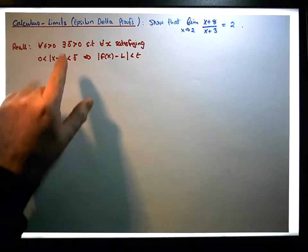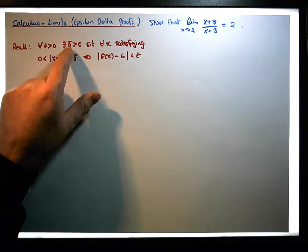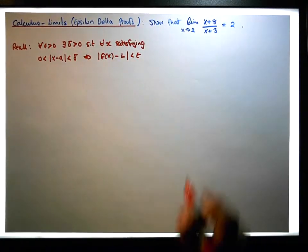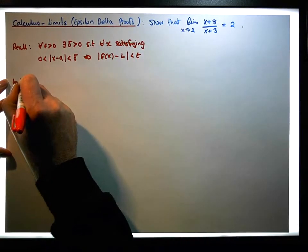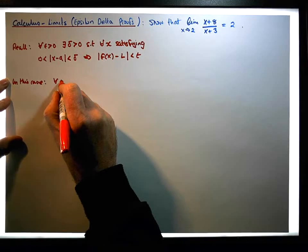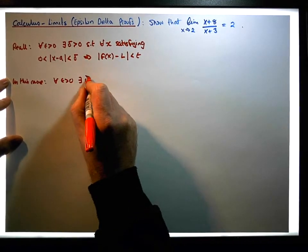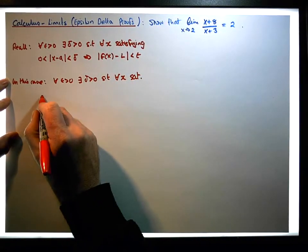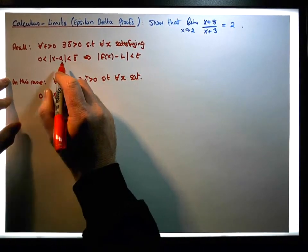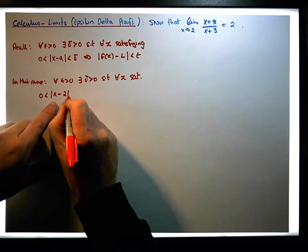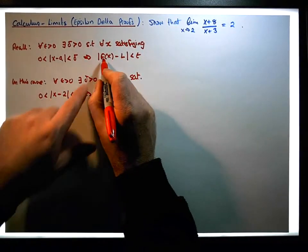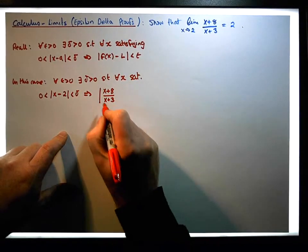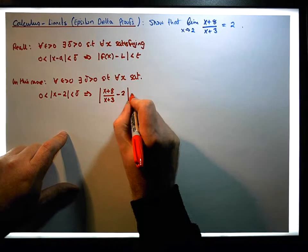So the goal of this particular proof is to find a delta greater than zero such that when |x minus a| is less than delta, this ensures that |f(x) minus L| is less than epsilon. In this case, what we need to show is that for each and every epsilon greater than zero, there exists a delta greater than zero, such that for every x satisfying zero less than |x minus 2| less than delta, this implies that the absolute value of (x plus 8)/(x plus 3) minus 2 is less than epsilon.